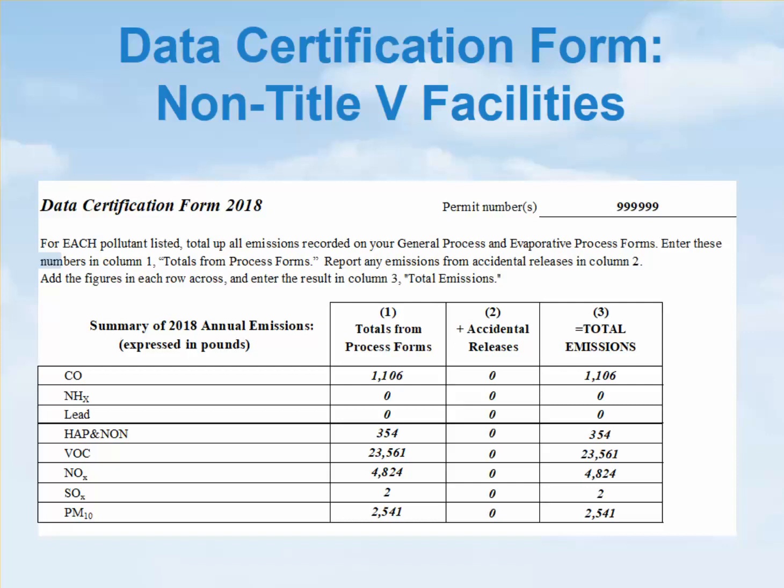The first leftmost column lists the pollutants with reported emissions in pounds. Column 1 is the total emissions for each pollutant from the general and evaporative process forms. Column 2 represents accidental releases of pollutants from your facility. Column 3 is the total of process form and accidental release emissions, or columns 1 and 2.